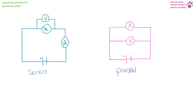Here we have a circuit in series where you can run your finger the whole way through from the battery to all the components. And here we have a circuit in parallel where it has branches or ladders — you can't run your finger around everything without going over something twice. You'll notice we have an ammeter that is in series and our voltmeter that has to be in parallel around the component.